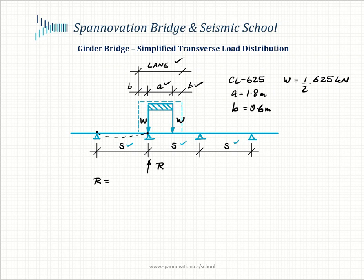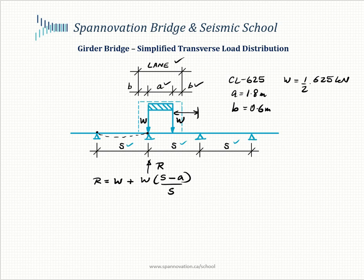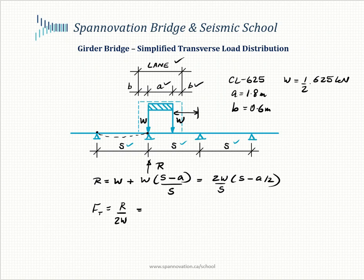To maximize the load effect, one wheel line is positioned directly on top of the girder of interest. Assuming the slab is simply supported between girder lines, the reaction R equals the load from the wheel directly above it, plus the second wheel line contribution W times (S minus A) divided by S, giving R equal to 2W/S times (S minus A/2). The transverse load distribution factor Ft is R divided by total truck load 2W, giving Ft equal to 1 minus 0.9/S, where S is in meters.